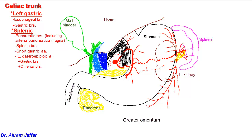Remember, the greater omentum is suspended from the greater curvature of the stomach, so these are the omental or epiploic branches. The continuation of the left gastroepiploic artery will anastomose with the right gastroepiploic artery, which I am going to talk about in a moment.